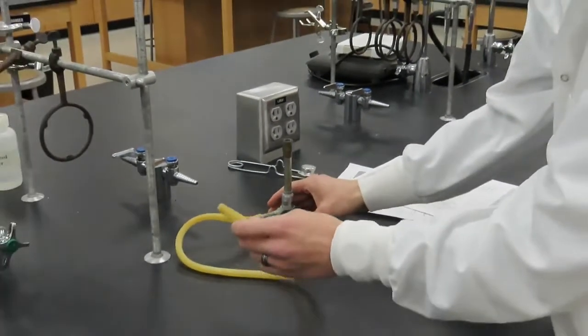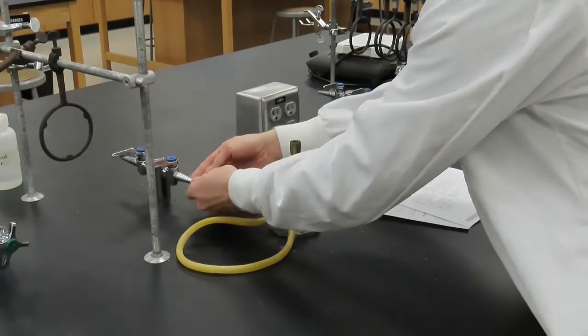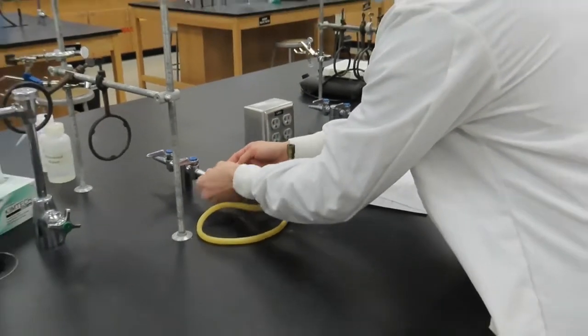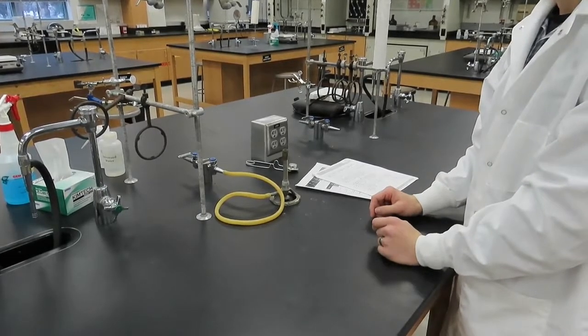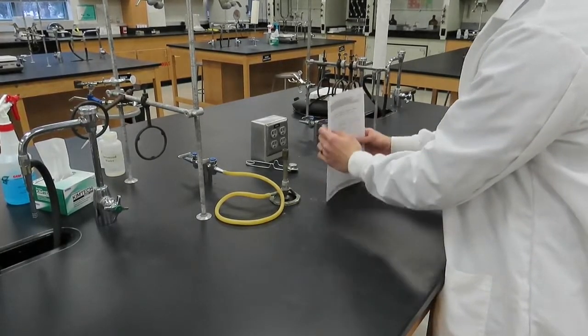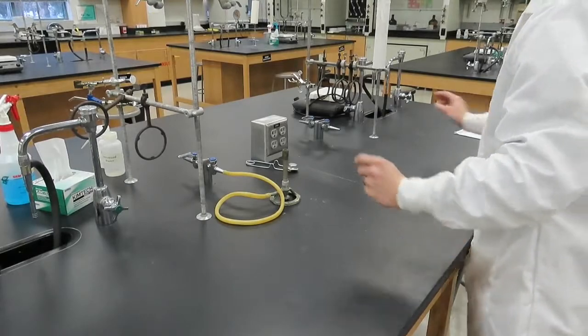With the burner properly adjusted, we will now connect the gas intake hose to the gas valve on the lab bench. Before lighting the burner, it is very important to move any flammable materials away from the burner.